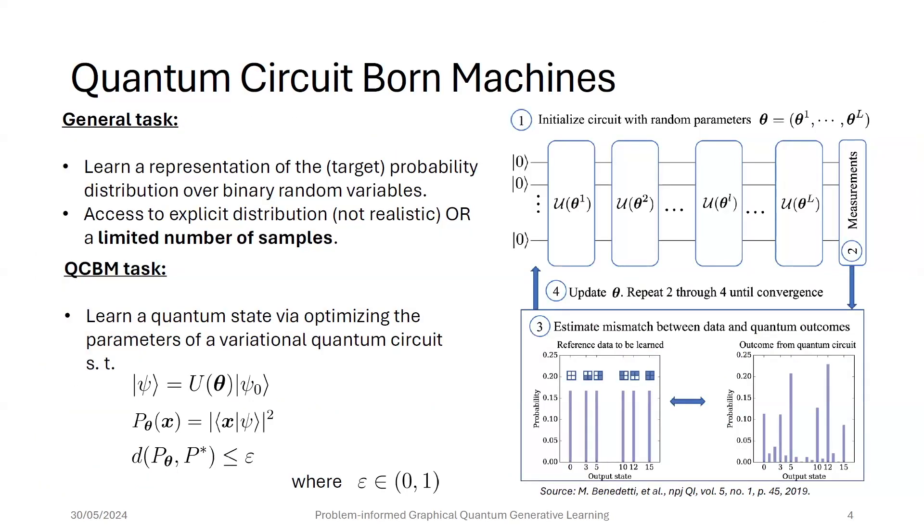So what are these quantum circuit born machines? The general task they want to solve is to learn representation of a target probability distribution over binary random variables. And we either have explicit access to the target distribution, which is not very realistic, or we have access to a limited number of training samples, and we want to generalize based on them.